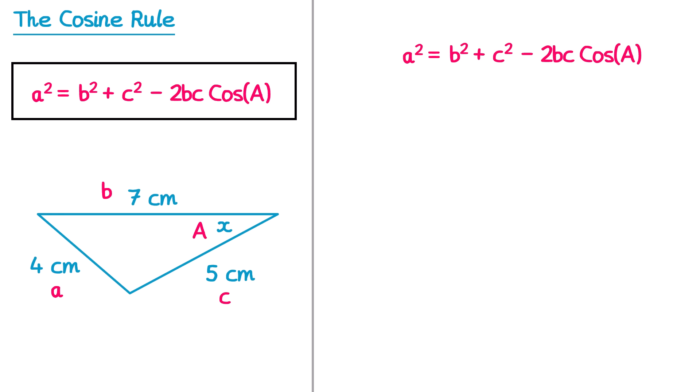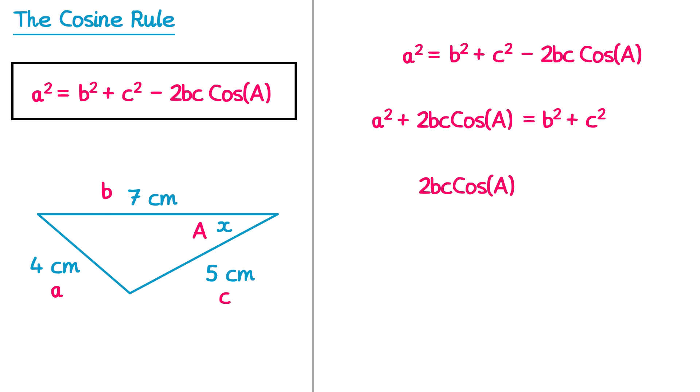So if we take the cosine rule formula, and you see we've got this minus 2bc cos A on the right hand side here, we're going to add 2bc cos A to both sides, and that will cancel it from the right hand side. So on the left hand side we've got a squared there already, but now we've got plus 2bc cos A, and on the right hand side it will have cancelled, so it's just b squared plus c squared. Now we're going to subtract a squared from both sides — this will mean there's no a squared on the left anymore, so it's just 2bc cos A, and on the right hand side we've got b squared plus c squared minus a squared. Next we're going to divide both sides by 2bc — that will cancel the 2bc on the left, so it's just cos of A, and on the right hand side we have b squared plus c squared minus a squared, divided by 2bc.